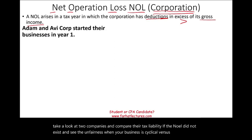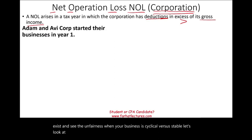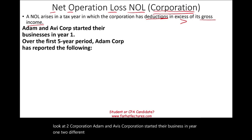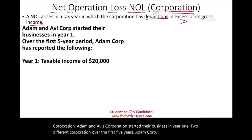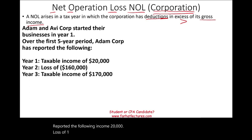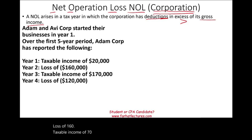Let's look at two corporations. Adam and Avi's corporations started their business in year one — two different corporations. Over the first five years, Adam Corp reported the following income: $20,000, a loss of $160,000, taxable income of $70,000 in year three, a loss of $120,000, and taxable income of $150,000.